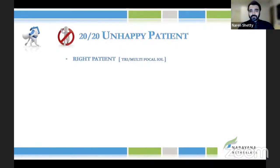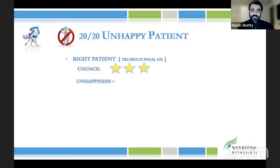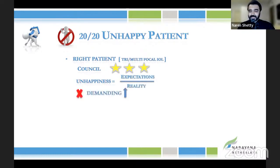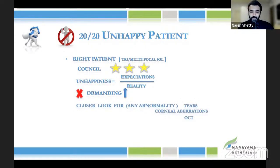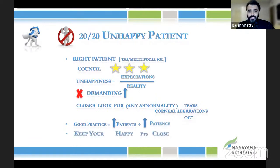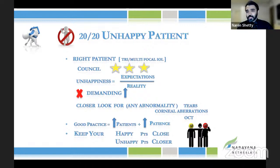To summarize: to avoid an unhappy 2020 patient, always choose the right patient — it's very important. Counseling is also crucial; make sure the patient has realistic expectations. Unhappiness equals expectations divided by reality, so always keep expectations realistic so the patient stays happy. Be cautious with highly demanding patients and counsel them well before surgery. Always look closely for any abnormality. A good practice doesn't just mean more patients — it means more happy patients. Keep your happy patients close and your unhappy patients closer; see them more often and make them understand you're with them until they're happy.